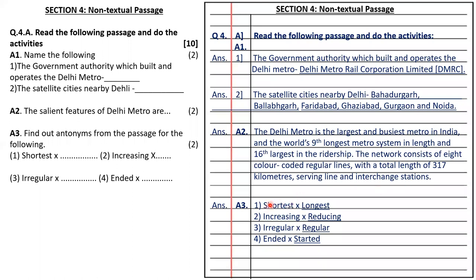The next question is write the antonyms from the passage. Shortest is longest; increasing is reducing; irregular is regular; and ended is started.